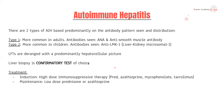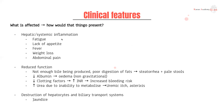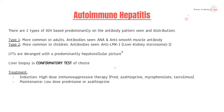Starting off with autoimmune hepatitis — there are two types, but you don't need to know much about them. The key thing to know is the antibodies: the anti-smooth muscle antibody is commonly seen in type 1 AIH, which is more common in adults. Autoimmune hepatitis is ANA positive with anti-smooth muscle antibody, and LFTs would be deranged with a hepatocellular pattern.